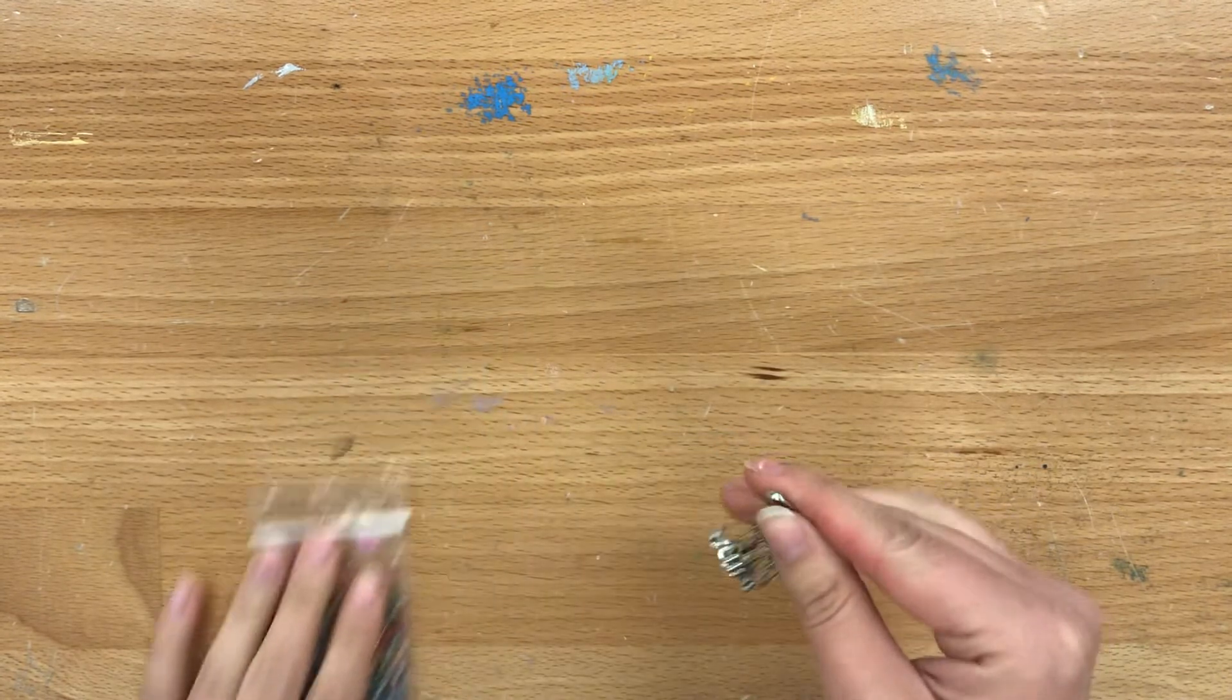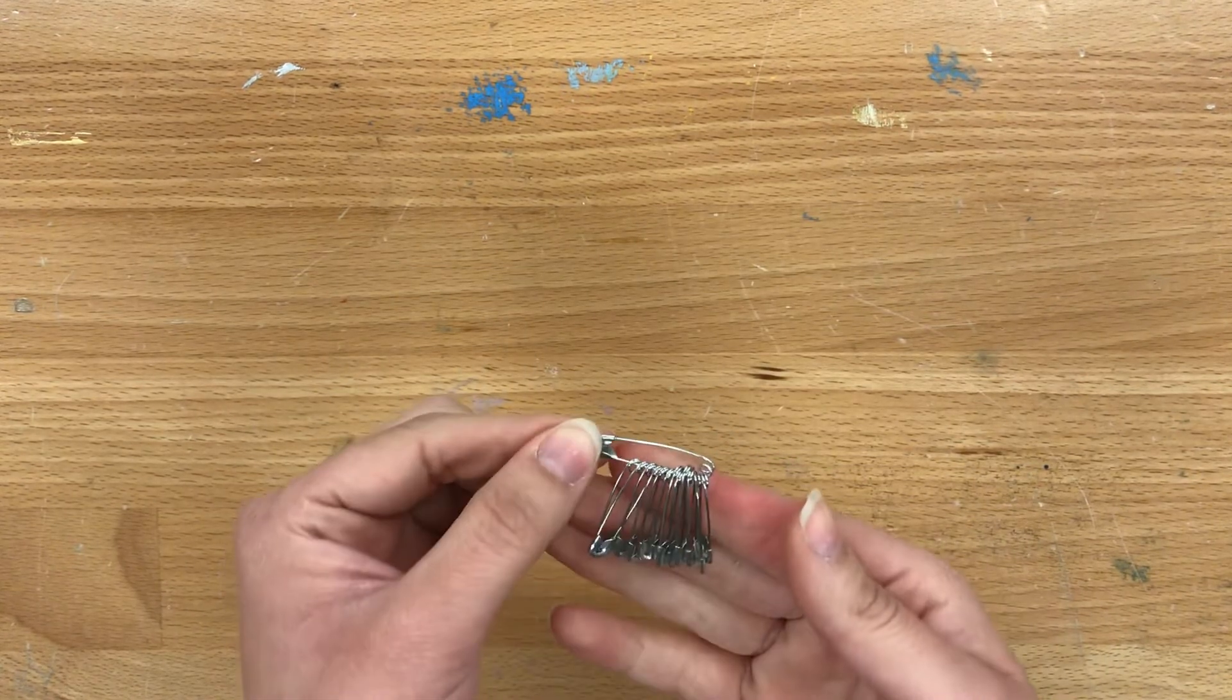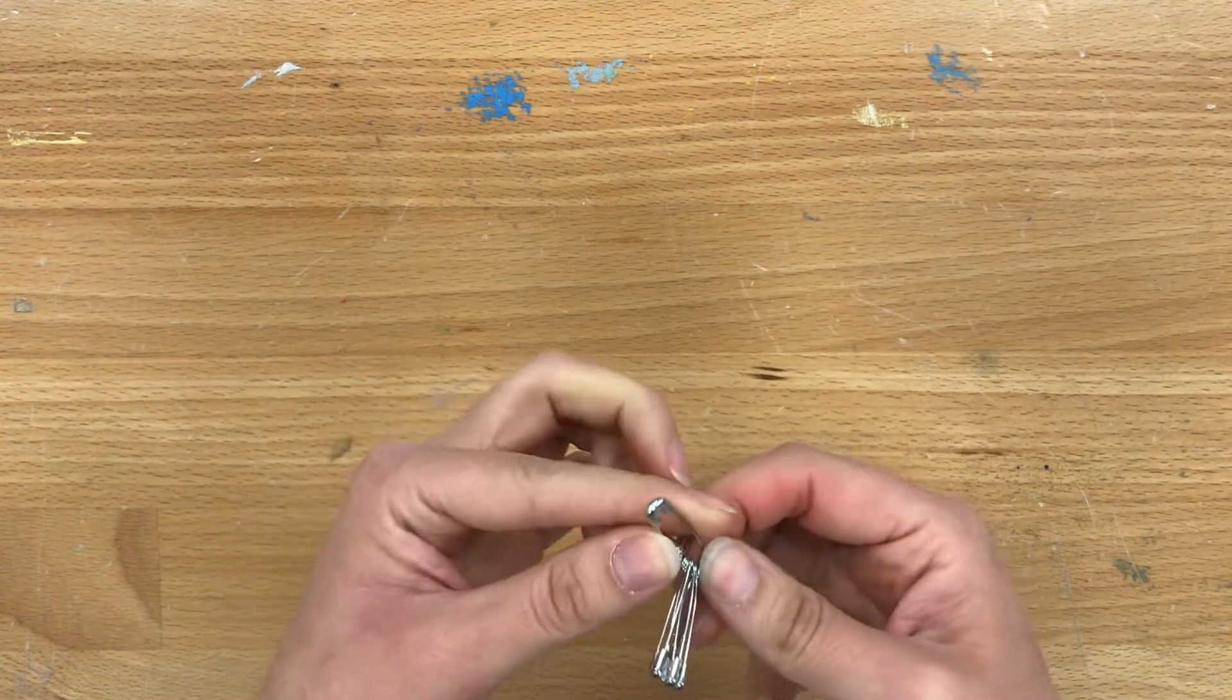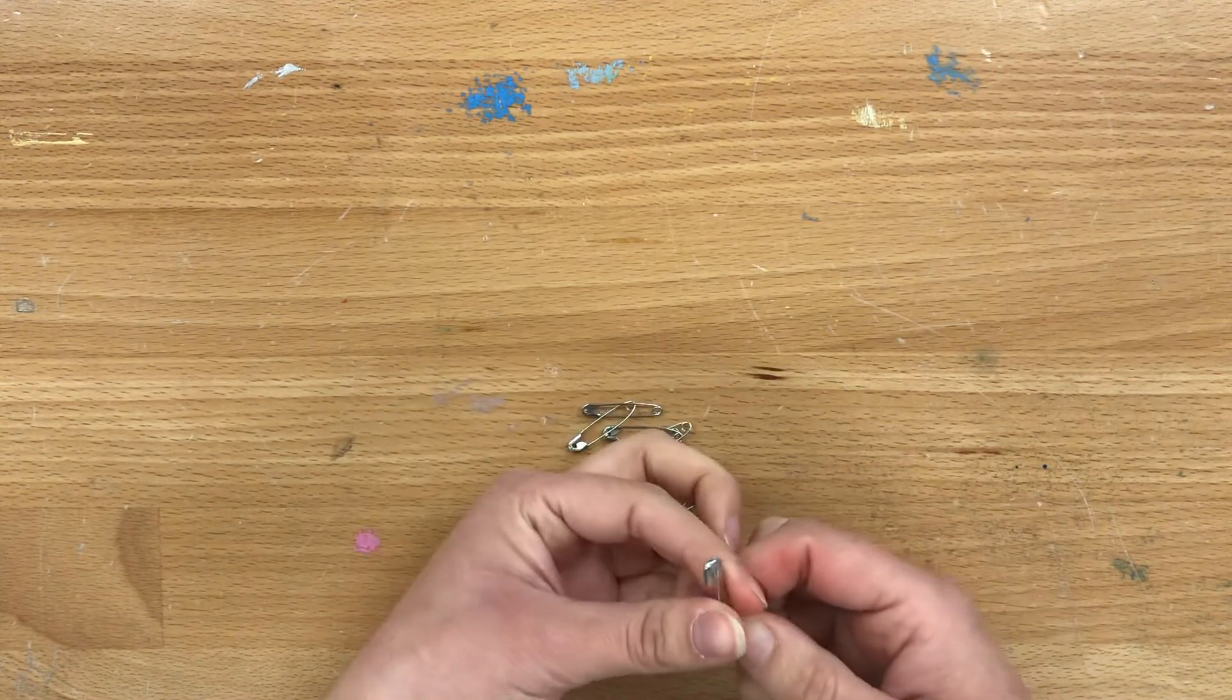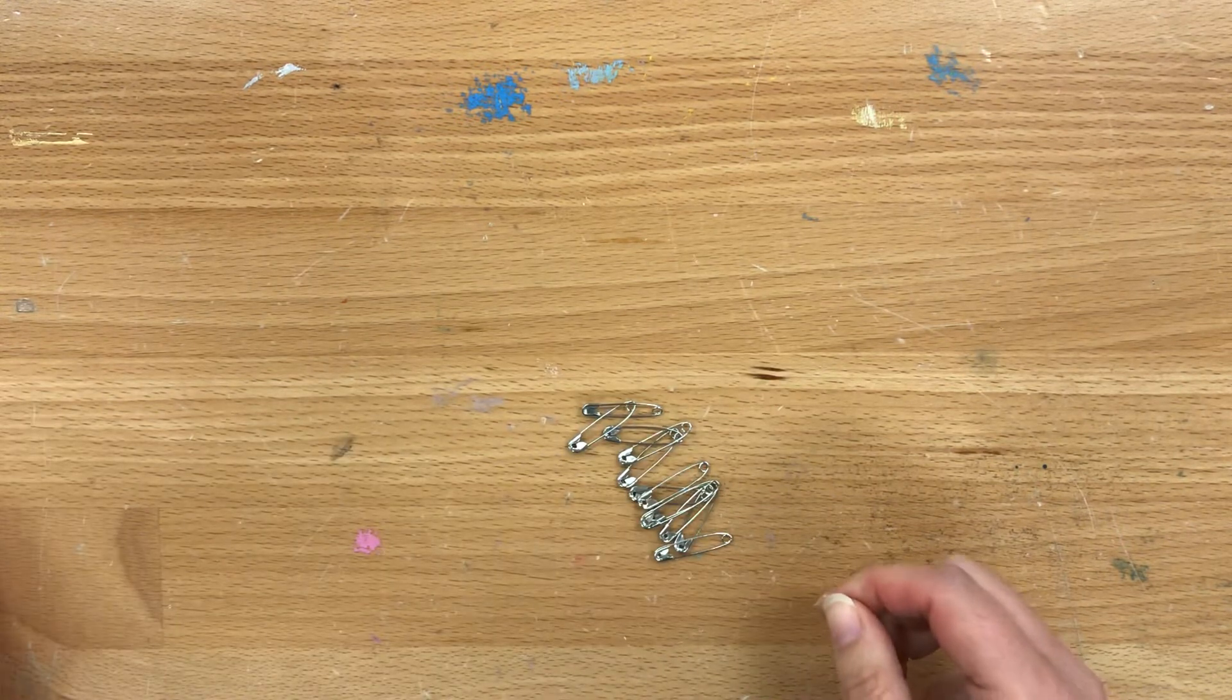So the first step is going to be to take this bundle of safety pins and remove all the small safety pins from the large ones and just set the large one aside for now. We'll come back to it later.